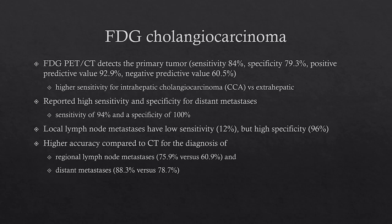In cholangiocarcinoma, FDG has good sensitivity and specificity mainly for intrahepatic compared to extrahepatic cholangiocarcinoma. It has good sensitivity and specificity for distant metastases, but low sensitivity and high specificity for nodal metastases. It has been reported as having higher accuracy compared to CT for regional lymph node metastases and distant metastases.